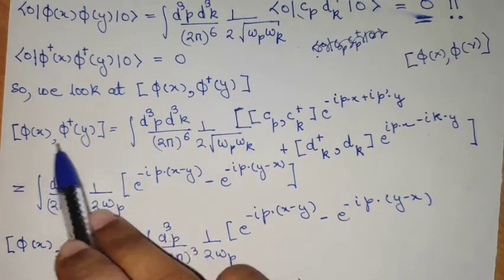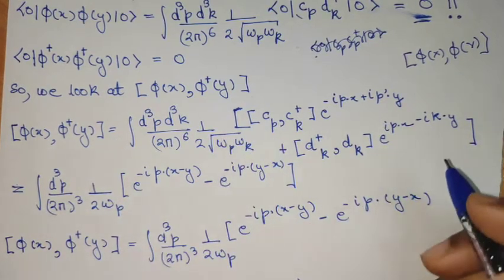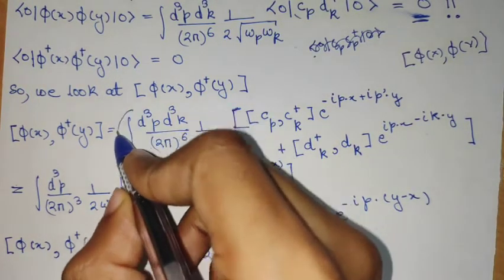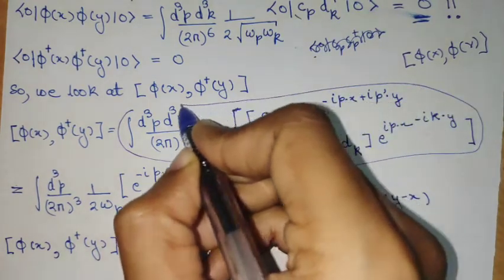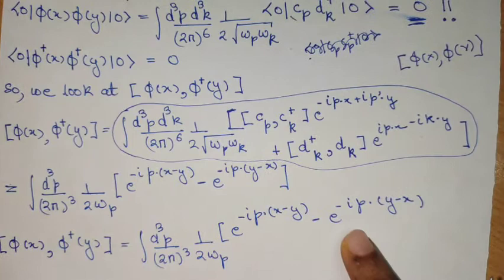But here we are using phi dagger. So this can be written in this form, the form is of this kind, I have written it here, this can be written of this form.